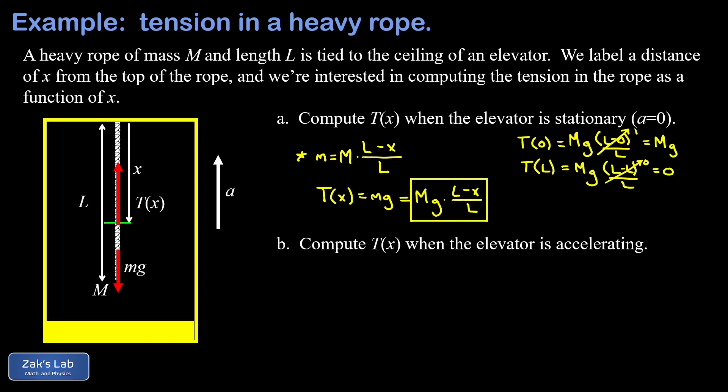Now we apply Newton's second law. And we'll start at the very beginning here by saying f net is equal to ma. And we're using upward as the positive direction here. So f net is going to be a positive t of x, because that points upward, minus little mg, because it points downward, and that's equal to little m times a.